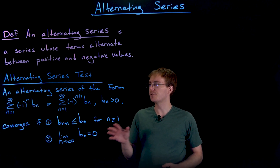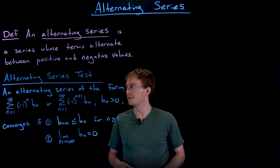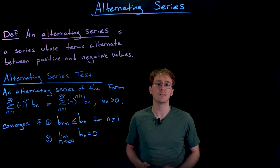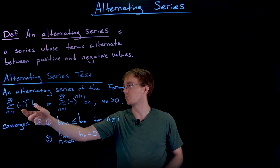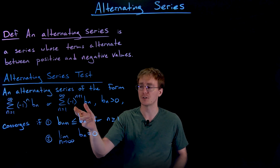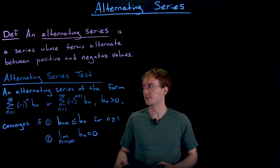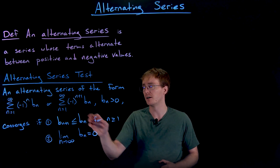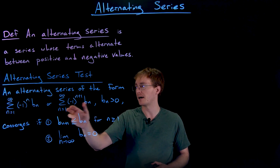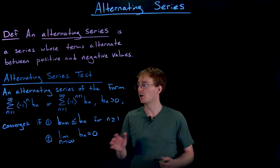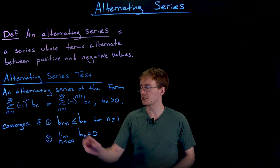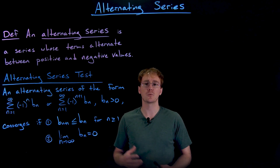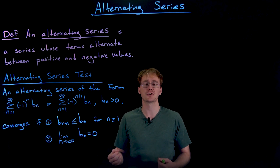The alternating series test says: if we have an alternating series of the form the sum of negative one to the n times b sub n, or negative one to the n plus one times b sub n — where b sub n is always a positive number representing the coefficient — then the alternating series will converge if two conditions are met. First, the (n+1)th term is smaller than the nth term, meaning the terms are getting smaller and smaller. Second, the terms are eventually approaching zero.